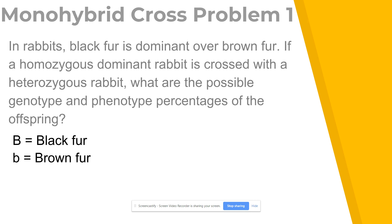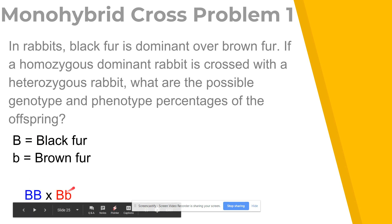Step two is going to be to show the cross. The second sentence says a homozygous dominant rabbit is crossed with a heterozygous rabbit. Homozygous dominant means two dominant alleles — big B big B — and heterozygous means two different alleles — big B little b. So that is where we get this cross. This is step two of the problem.